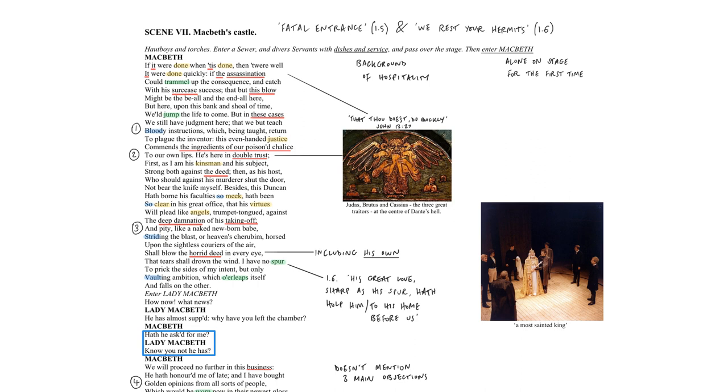He worries that if he's successful in killing Duncan, all he'll be doing is teaching bloody instructions which will return to plague the inventor. That means return to plague him. So it's essentially copycat crimes that he foresees in the future that concern him. Somebody might get the idea, from his making a success of killing Duncan, that they too could steal the crown from him. Hence, the poison chalice he's about to serve to Duncan could easily be returned to his own lips. So his primary concern here, and the first reason he gives against killing Duncan, is a concern for his own political longevity.